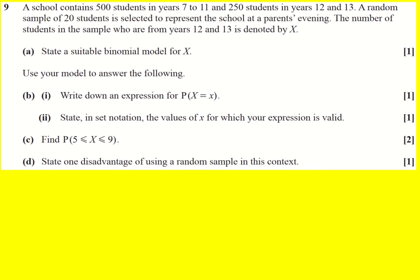State a suitable binomial model for x. So x is going to follow a binomial distribution. We're taking a sample of 20 students so there's going to be 20 trials, and then the probability of success is going to be the probability of picking at random a year 12 or 13. The proportion of year 12 and 13 is 250 over 750, the total number, and that cancels down to a third which gives us our answer.